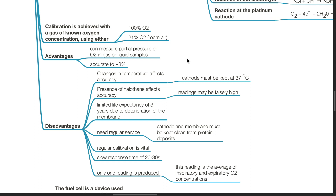Further disadvantages: it needs regular service, and the cathode and membrane must be kept clean from protein deposits. Regular calibration is vital. It has a slow response time of 20 to 30 seconds. Only one reading is produced, which is the average of the inspiratory and expiratory oxygen concentrations.